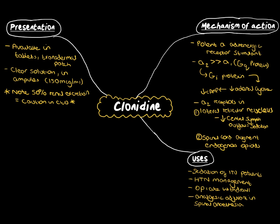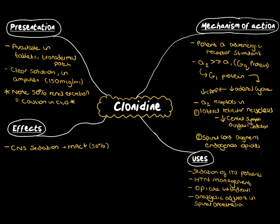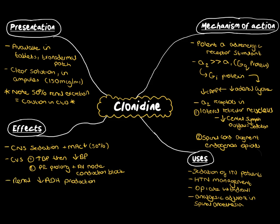The effects of clonidine: on the central nervous system it leads to sedation, and it has a profound effect on MAC, potentially dropping the MAC of many volatiles by up to 50%. On the cardiovascular system, it can initially cause some hypertension through alpha-1 receptor effects, but the predominant overriding effect is hypotension. It can also prolong the PR interval and cause a momentary blockade of AV node conduction. Renally, it can lead to a reduction in the production of ADH, and caution is required in patients with renal failure.